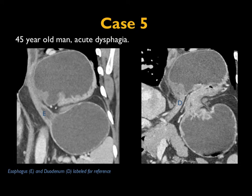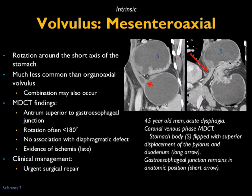Another case with dysphagia — this looks very similar to the last case. Where's the esophagus, where's the duodenum? What you have here is a volvulus, but in the mesentero-axial perspective — rotation around the short axis of the stomach. It's less common than organo-axial volvulus, and you can actually have both combined. The antrum is seen superior to the GE junction. Rotation is usually under 180 degrees and is not associated with a diaphragmatic defect. Evidence of ischemia can be present but is late. As with all gastric volvulus, surgery is mandated.